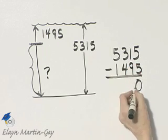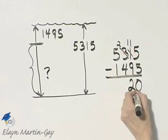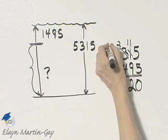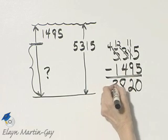5 from 5 is 0. Here I'll need to borrow. 11 minus 9 is 2. Again, I'll need to borrow. 12 minus 4 is 8. 4 minus 1 is 3.